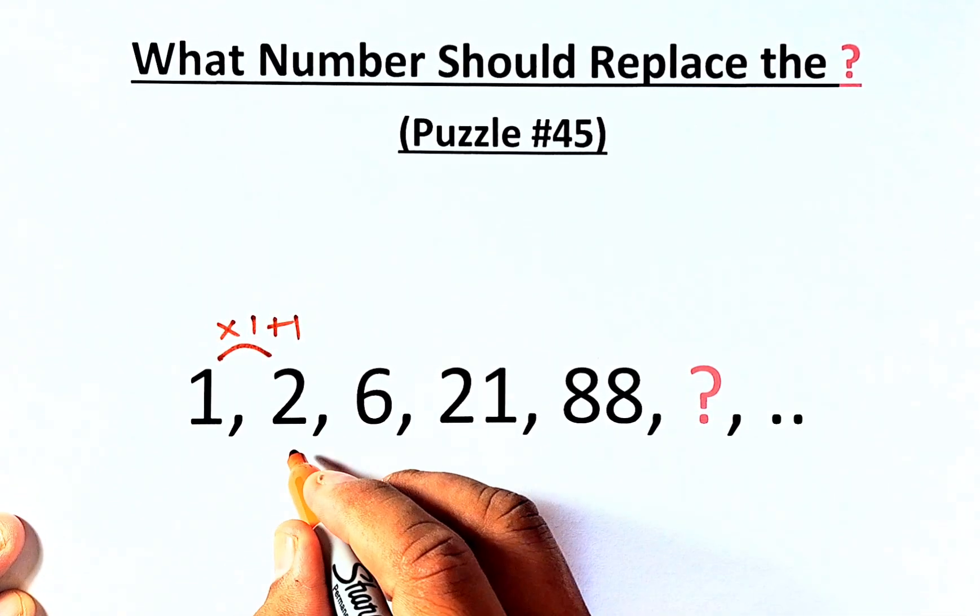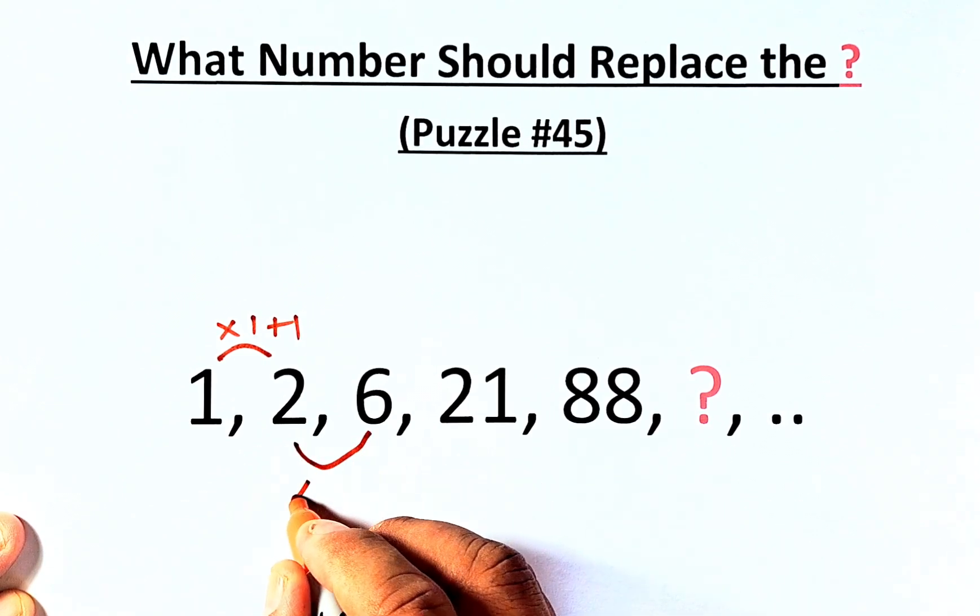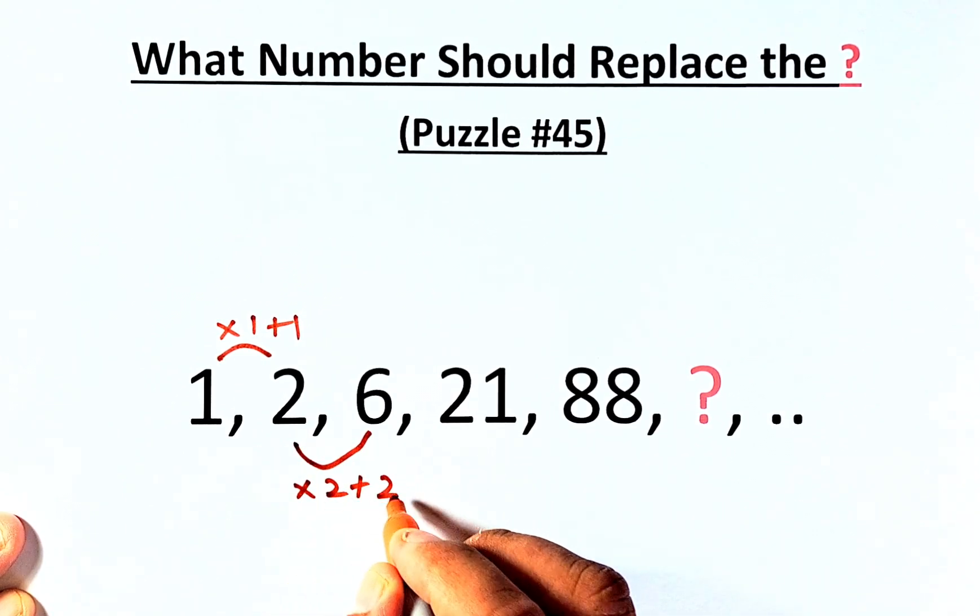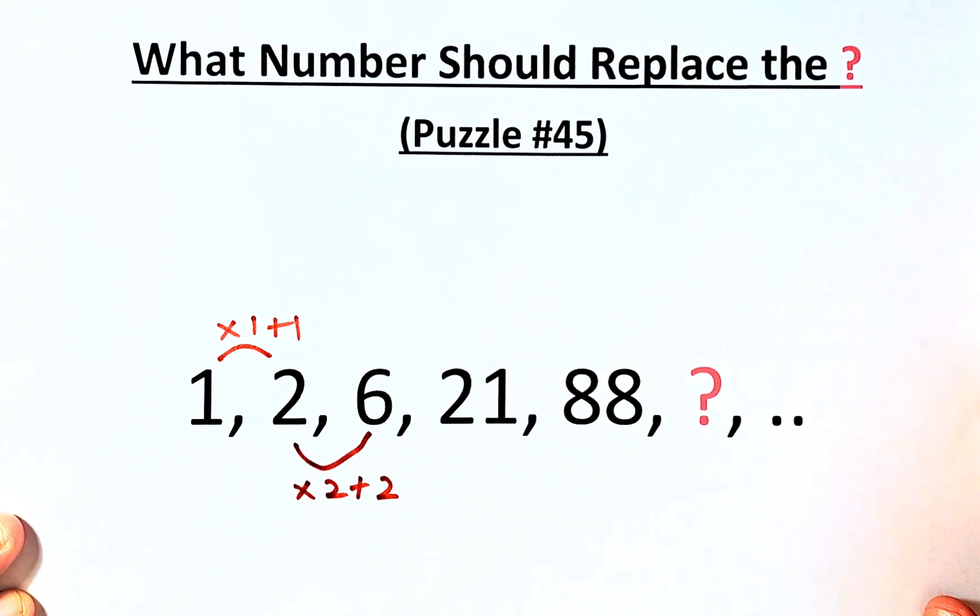From 2 to 6, we're going to increase by 1. Now we're going to multiply by 2 and plus 2. 2 times 2 is 4. 4 plus 2 will give us 6.